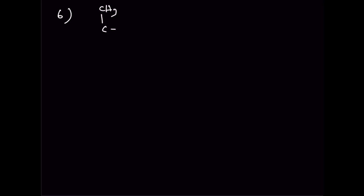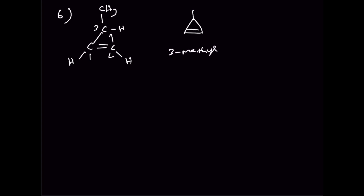Number six: we can write a three-membered ring with a double bond — cyclopropene — with a methyl group attached. The numbering starts 1, 2, 3. The same in bond line notation gives 3-methylcyclopropene.